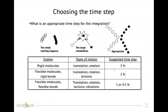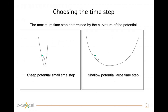There is a strict relation between the time step and the shape of the potential. When the potential is very narrow, we need a smaller time step. If the potential is more shallow, we can use a larger time step. This is also the reason why coarse-grained models have more shallow potentials and can use larger time steps than atomistic models.